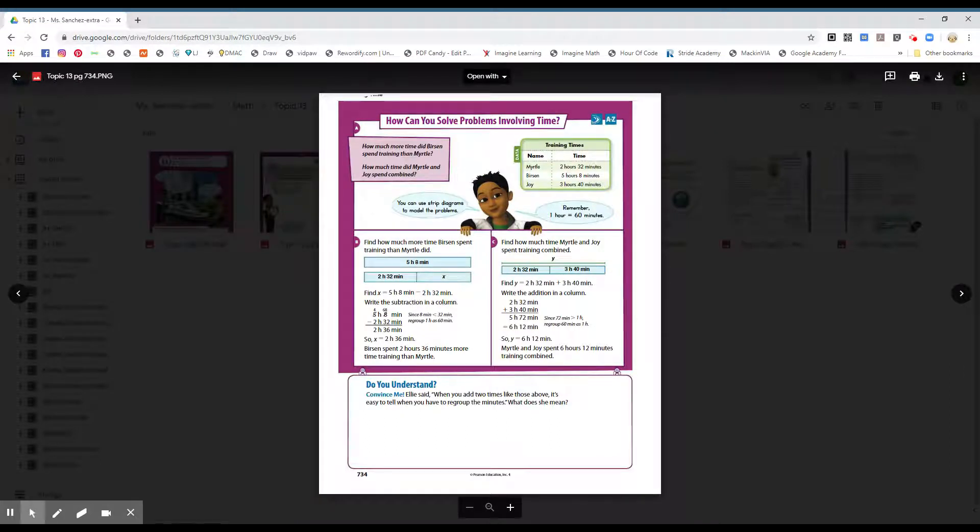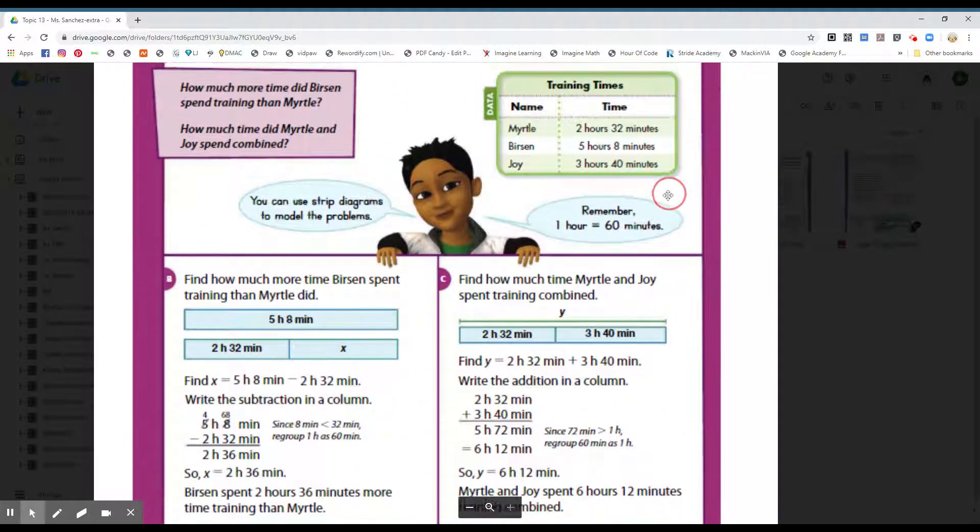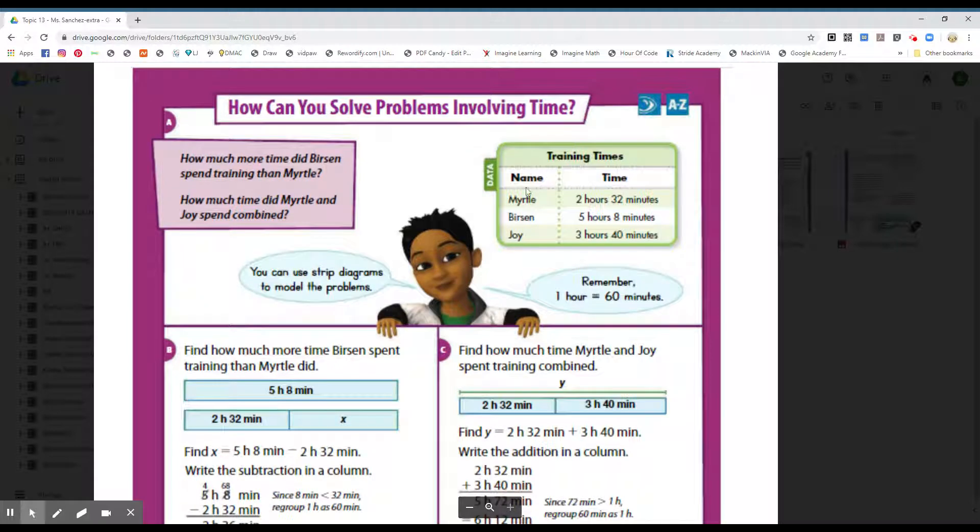Okay, how can you solve problems involving time? How much more time did Burson spend training than Myrtle? How much time did Myrtle and Joy spend combined? We have here a table, boys and girls, training times. We have three individuals, their name: Myrtle, Burson, and Joy, and this is the amount of time that they spend training.